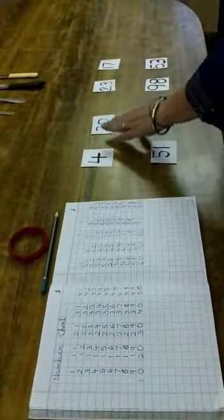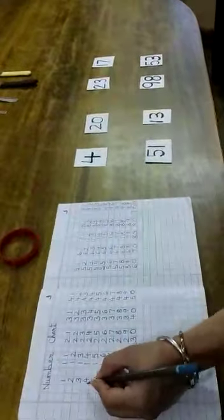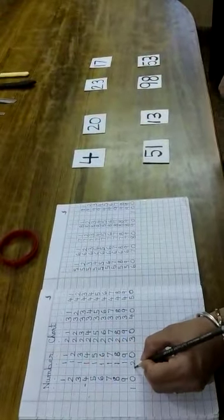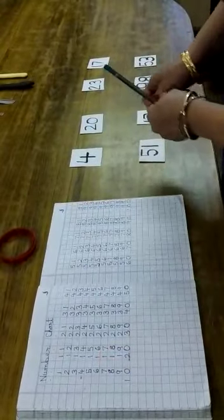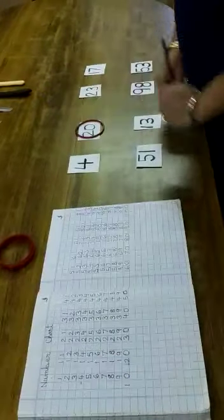So the first number is 4 and the other one is 20. So if we see the number chart, 4 comes here and 20 comes here. So 4 is first, 20 is later. So 20 is the big number.